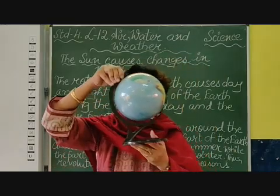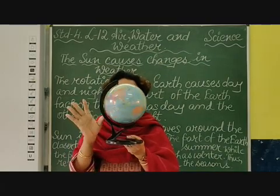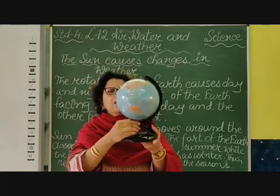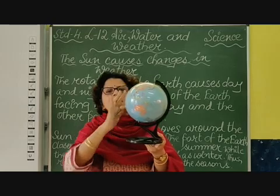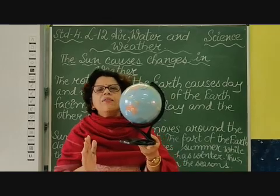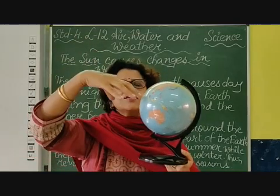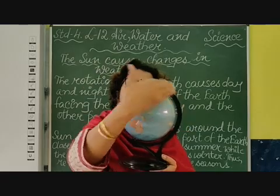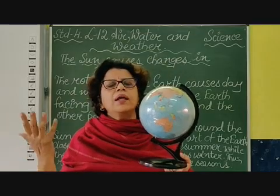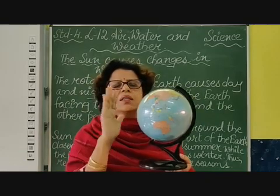The earth is spherical and it rotates on its axis — axis is an imaginary line, as we have discussed. As you can see, the sun's light is falling on this part of the earth. Naturally in this part we have daytime because it is lighted and getting the rays of the sunlight. But the other part, just opposite, will not be facing the sun and will not get the light and heat. So that part will have darkness — it is night. This part is day.